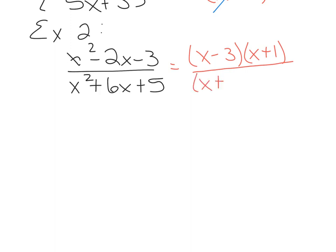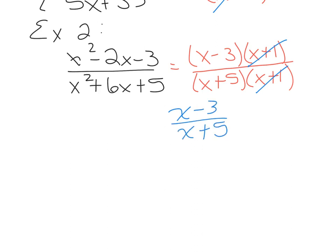The denominator factors to x plus 5 times x plus 1. You can check by double distributing to make sure you get back what you started with. Now, I can't reduce the x's because those entire binomials don't match, but the x plus 1's do match. So I can cancel the x plus 1's, and my final answer is x minus 3 over x plus 5. Remember, if there's an addition or subtraction sign next to a term, you cannot cancel it off.